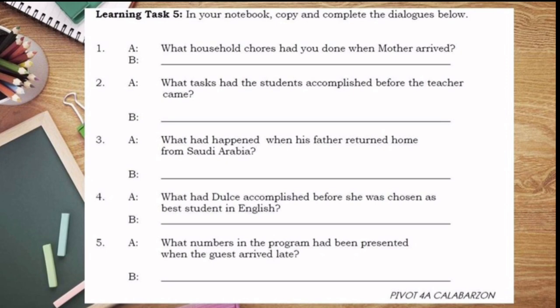For learning task number 5, the instruction is: in your notebook, copy and complete the dialogues below by constructing sentences that answer the given questions. Don't forget to apply the past and past perfect tense. For example, in number 1: 'What household chores had you done when mother arrived?' — meaning, what did you finish before your mother came home? For example: 'I had mopped the floor when mother arrived,' meaning you finished mopping before she arrived. Try to construct your own sentences answering questions 1 to 5.